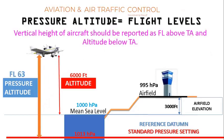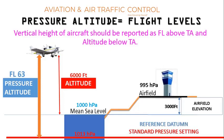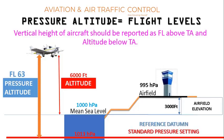Pressure altitude is known as flight levels. Vertical height of aircraft should be reported as flight level above transition altitude, where the datum is standard 1013. Vertical height of aircraft should be reported as altitude below transition altitude, where the datum is MSL mean sea level. So here we have understood two new terms: flight level and altitude. We will discuss transition altitude and related terms shortly.